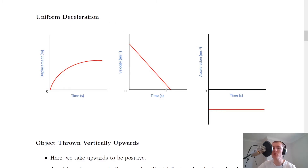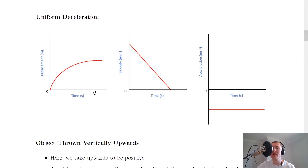For uniform deceleration, the velocity-time graph is a negatively sloping line. For the acceleration-time graph, because it's a deceleration — which is a negative acceleration — we show a constant horizontal line in the negative quadrant. The displacement-time graph is a curve starting at the origin that levels off over time, because the object is slowing down and covering less displacement each second.